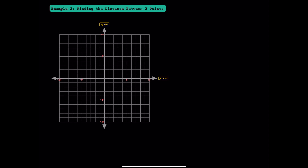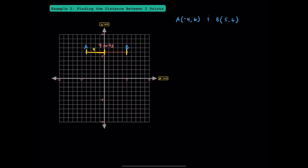Here in example 2, we're going to find the distance between 2 points. For this first example, let's say we have 2 points A and B. To find the distance between A and B, we can count the boxes between the points: 1, 2, 3, 4, 5, 6, 7, 8, 9. The distance between A and B is 9 units long. Instead of counting all the way across, we could break it into two smaller pieces — first the distance from A to the y-axis, which is 4 units, then the distance from B to the y-axis, which is 5 units. Adding these two distances up, we get 9 total units.